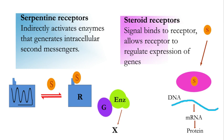Serpentine receptors contain seven transmembrane alpha helices. A signal binds to the receptor and activates an intracellular GTP-binding protein. This activated GTP-binding protein regulates an enzyme, and the enzyme generates an intracellular second messenger — for example, cyclic AMP, or phospholipase C, etc. Here R represents receptor, G represents GTP-binding protein, and X represents second messenger.